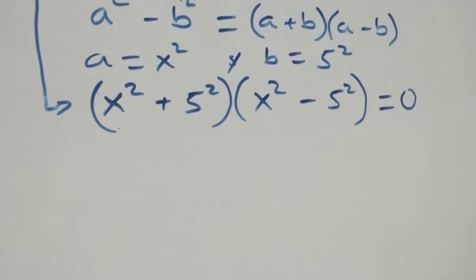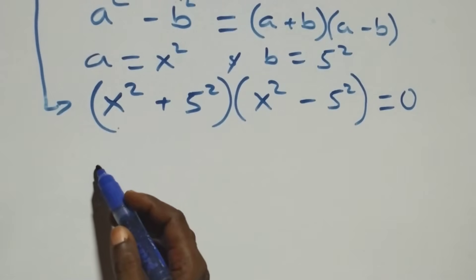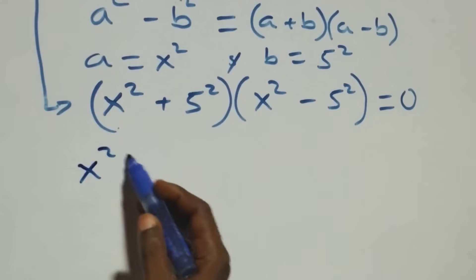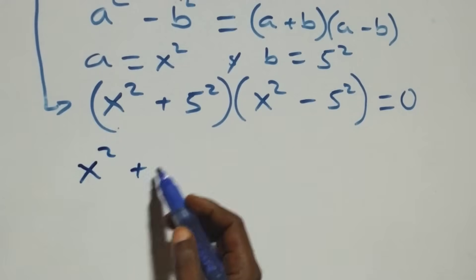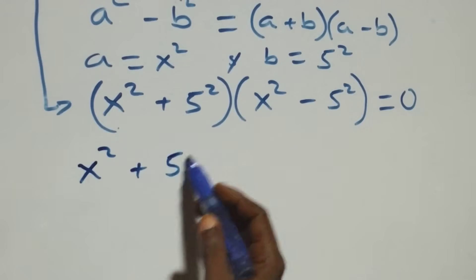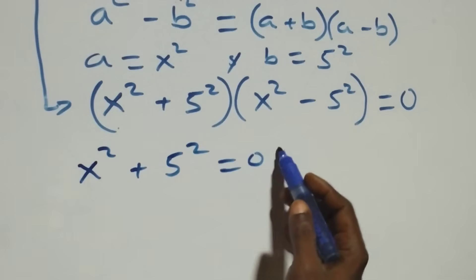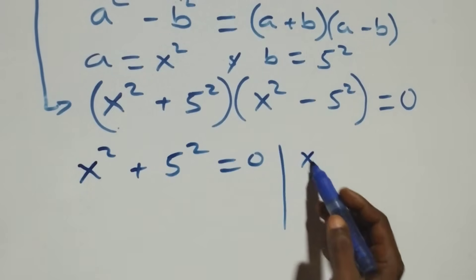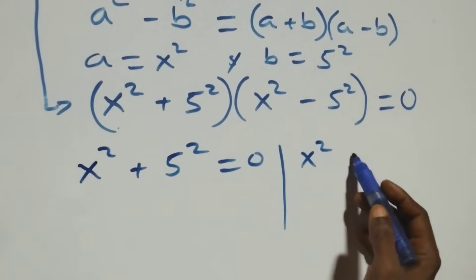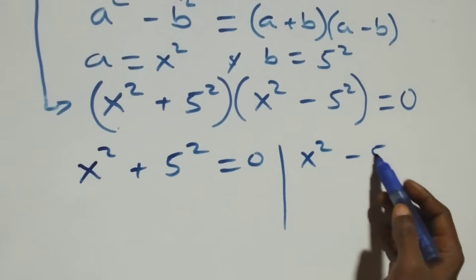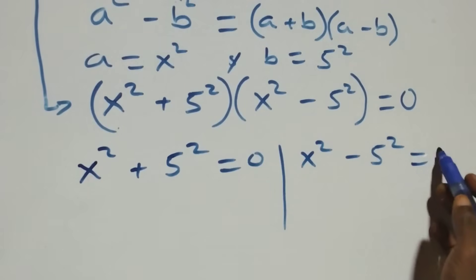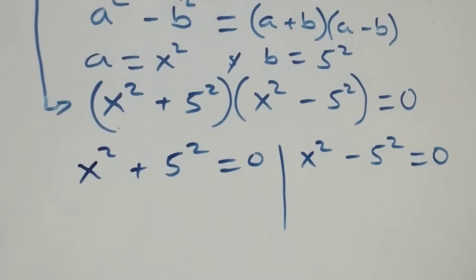From here we have two possible cases. The first one: x squared plus five squared equals zero, or the second one: x squared minus five squared equals zero.